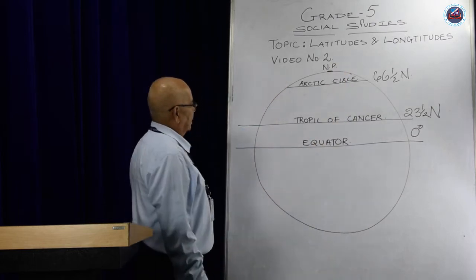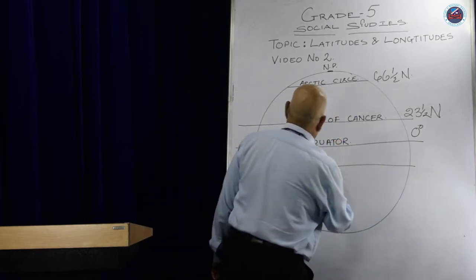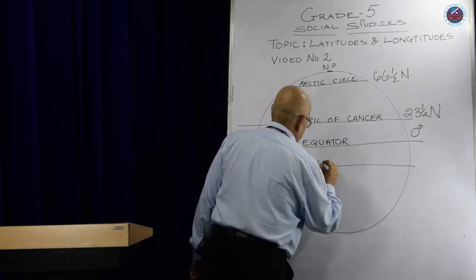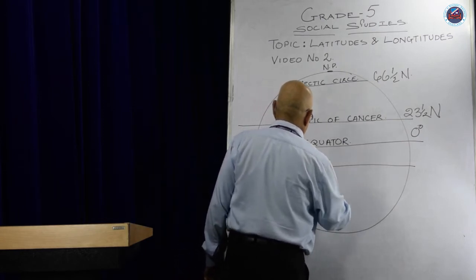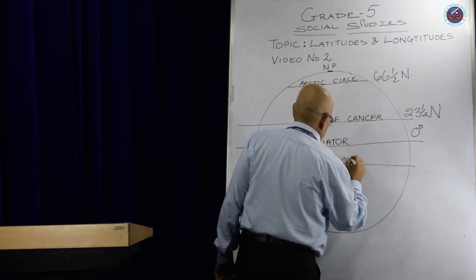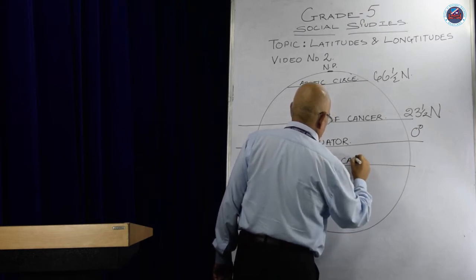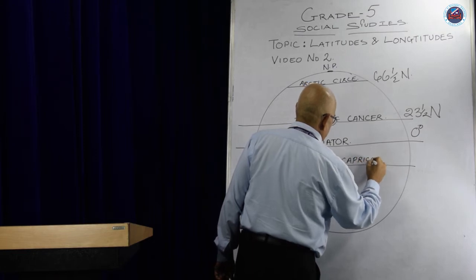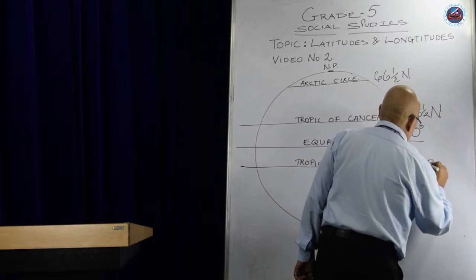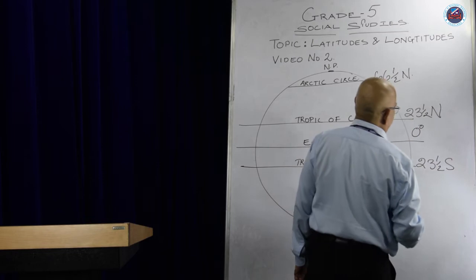On the southern part of the equator, we have the Tropic of Capricorn, which is at 23 and a half degrees south latitude.